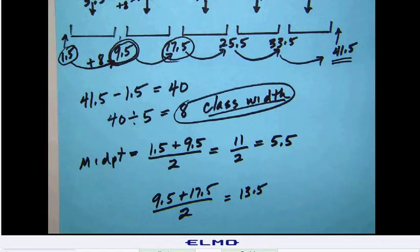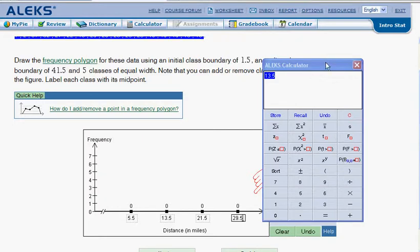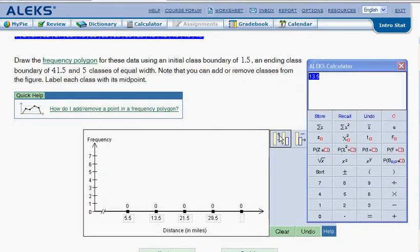Let's go back to ALEC and put those in. So we're going to have 5.5, 13.5, we're going to have 21.5, we're going to have 29.5, and then I notice that I don't have enough space for the next one, so I need to add one. 37.5, and I have all of my midpoints now in place.